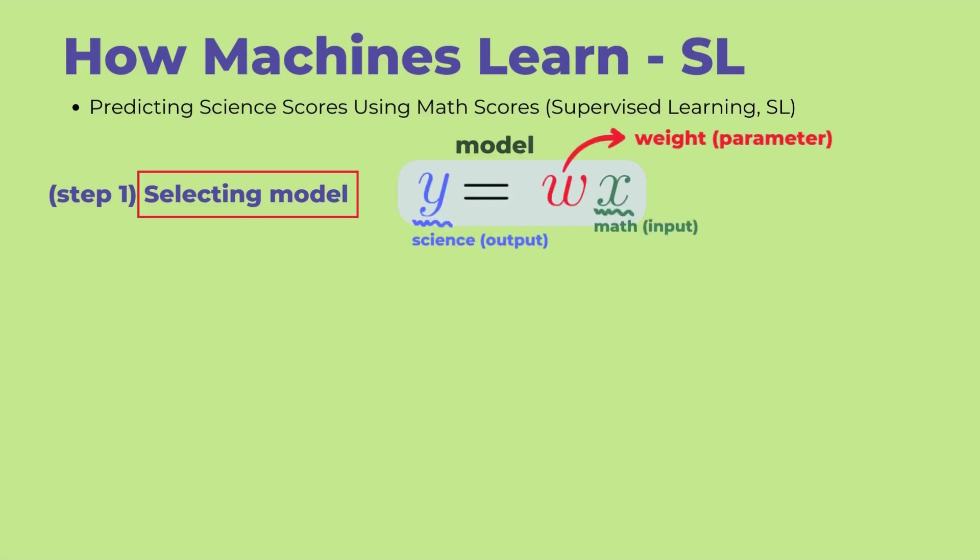Here, X is the input value representing the math score, and Y is the output value representing the science score. W is the coefficient of the function and is derived from the first letter of weight. In machine learning, coefficients are often referred to as parameters or weights.